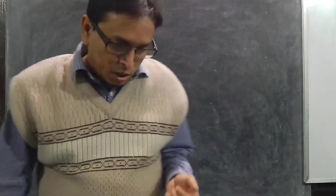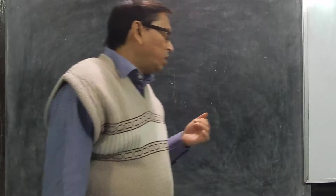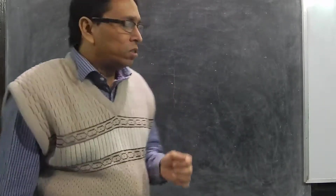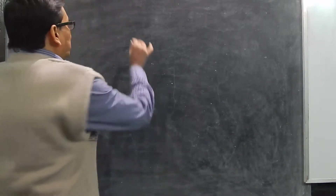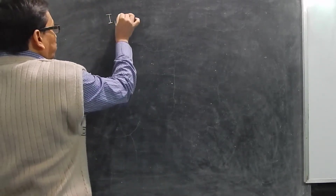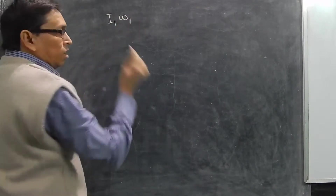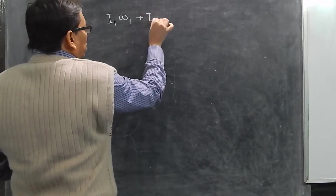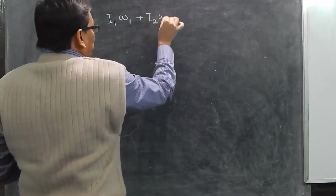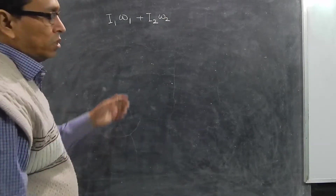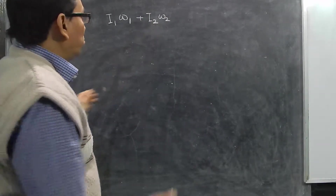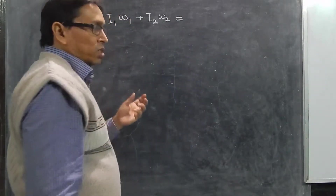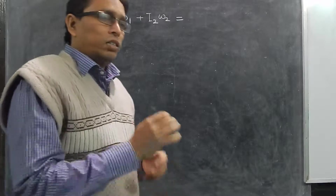Now I am discussing the conservation of angular momentum for rigid bodies. The basic formula is: if one body has moment of inertia I1 and is rotating with angular velocity ω1, and it comes in contact with another body having moment of inertia I2 rotating with angular velocity ω2, and if they join together — in rotational mechanics they will generally combine together.